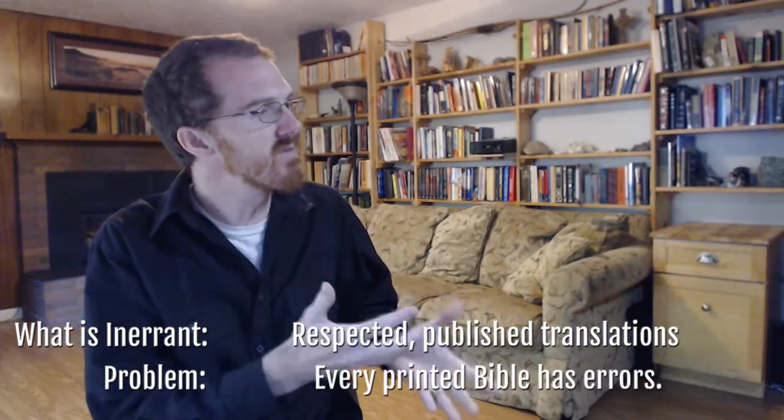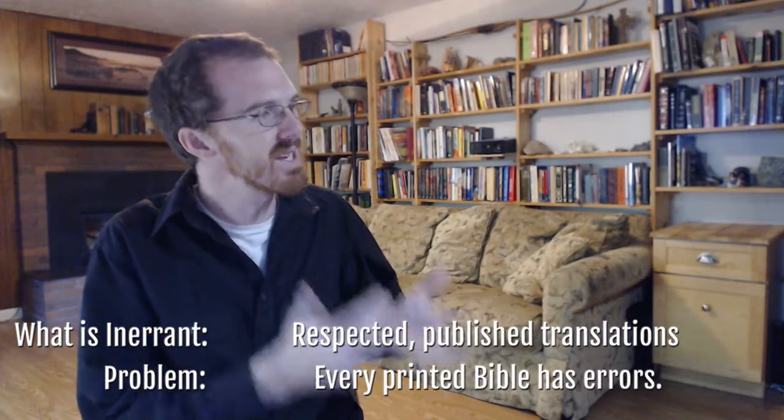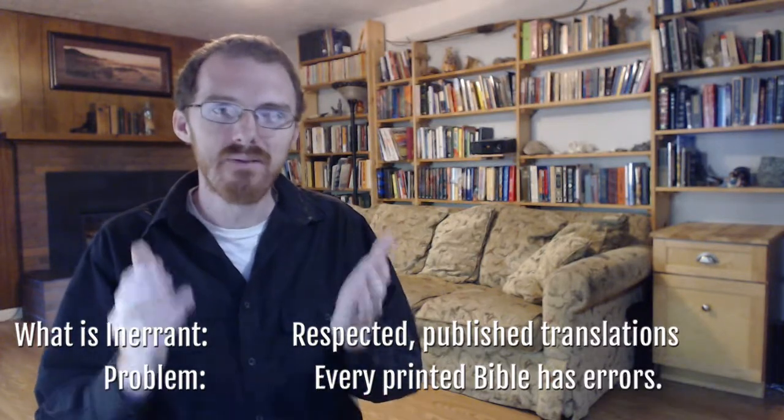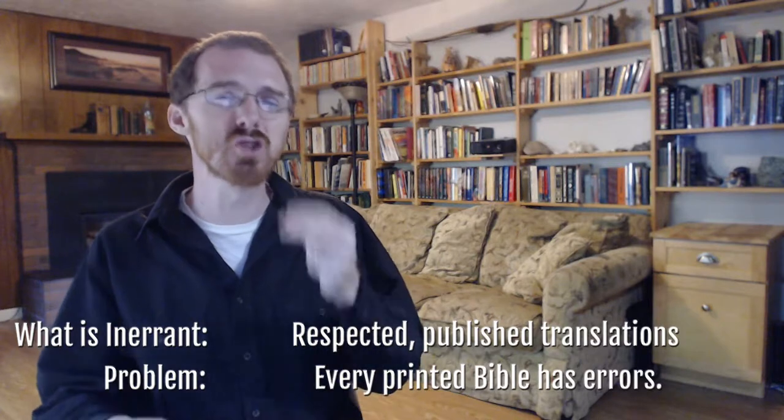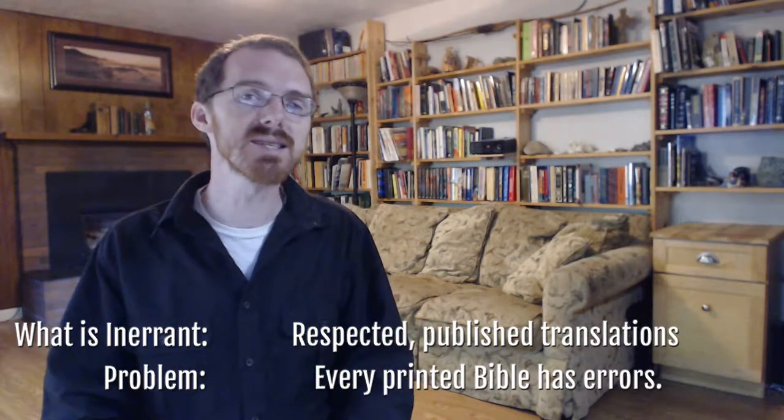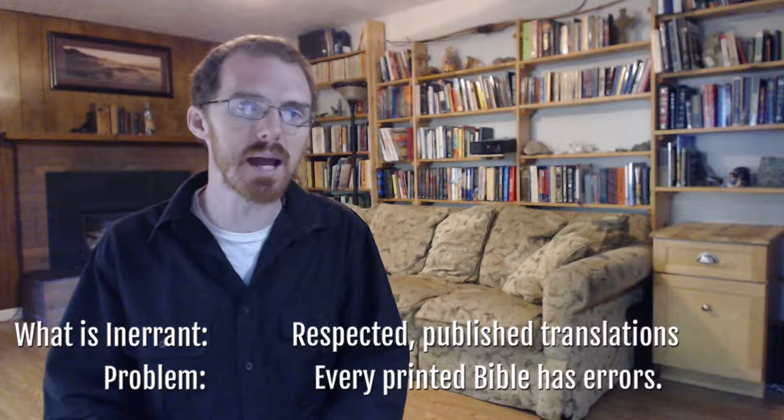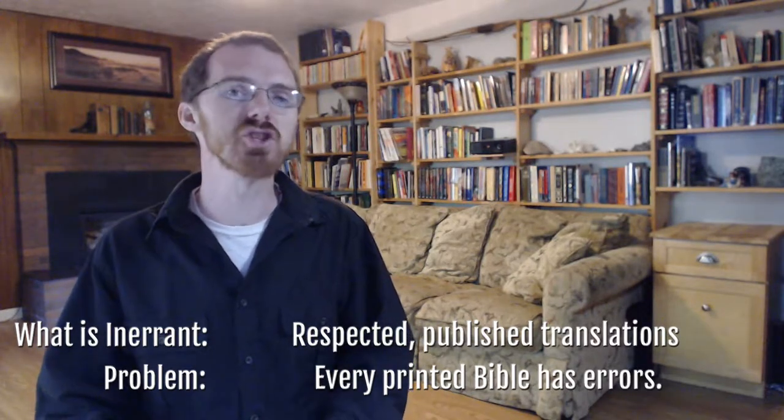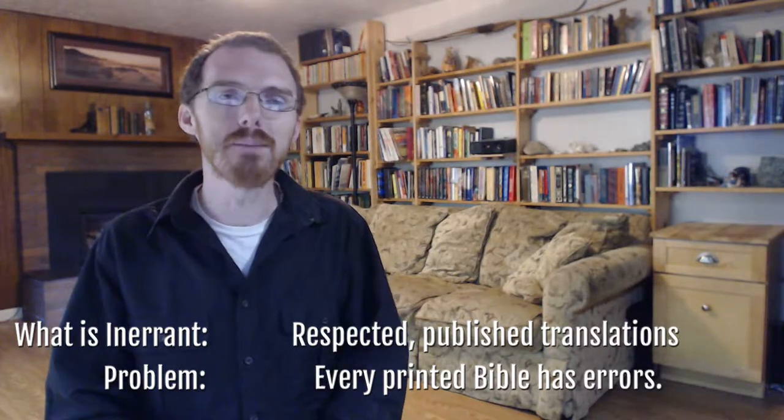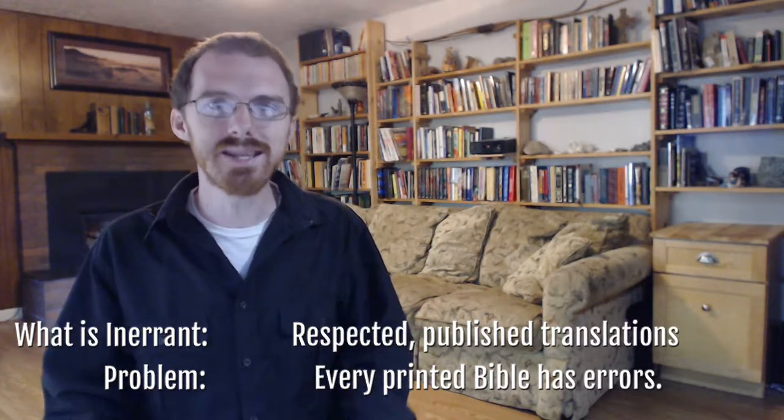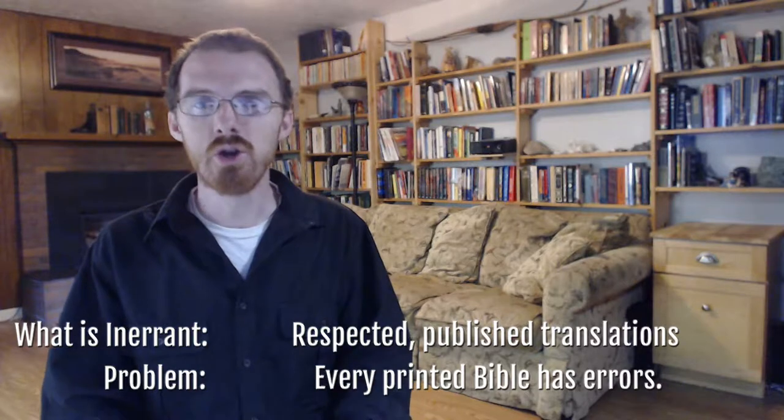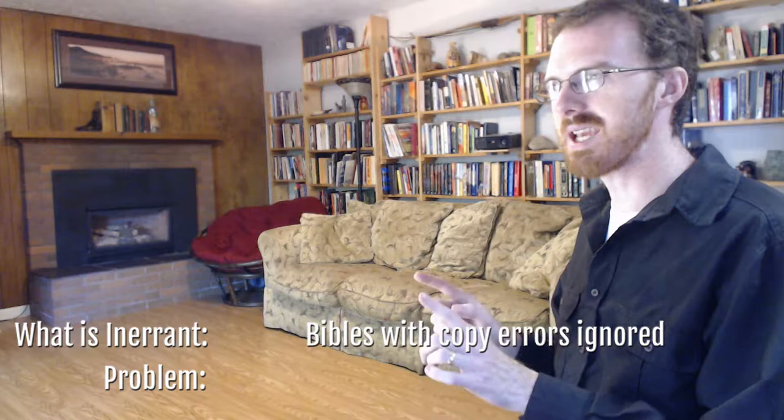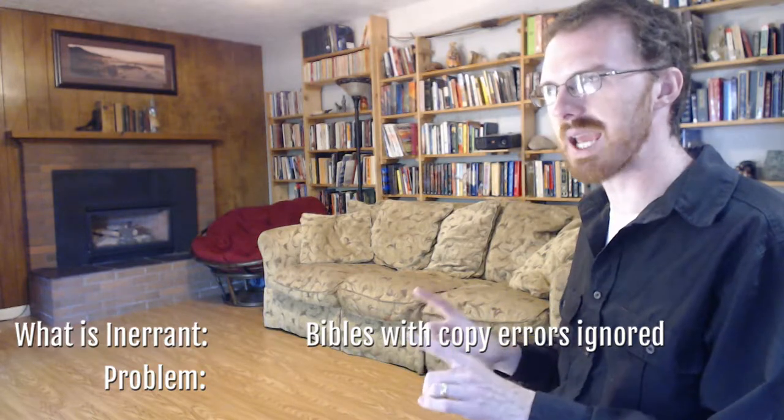But every version of the Bible ever made has significant errors in it. The King James Bible had over 400 variations fixed in the first two years of its printing. And in 1631, one version of the Bible was printed, which made the Ten Commandments say, Thou shalt commit adultery. The Bible in the pew is not without error. No Bible has ever been printed without error. Those are copy errors, mistakes in printing. Those aren't errors in the text itself.